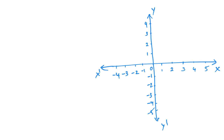Let's take another function. y is equal to x square minus 1. Now, y equal to x squared minus 1 — we will mark this point.